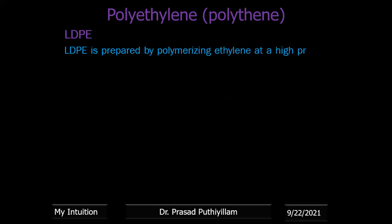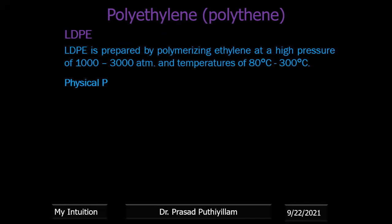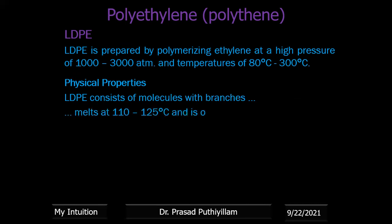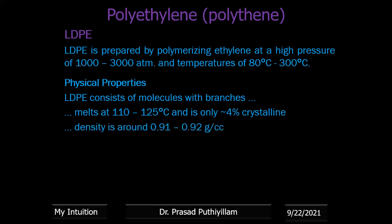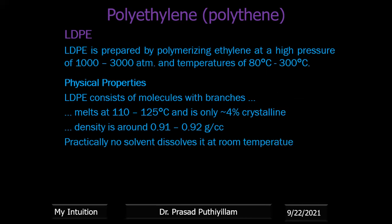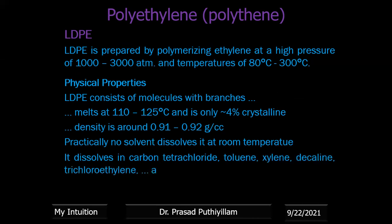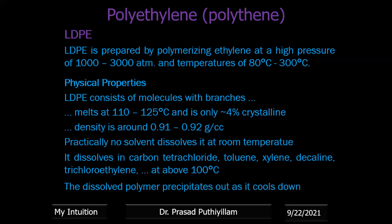LDPE is prepared by polymerizing ethylene at a high pressure of about 1000 to 3000 atmospheres and a high temperature up to 300°C. LDPE consists of molecules with branches, melts at around 110–125°C, and has very low crystallinity — only up to 4%. Density is around 0.91 to 0.92 g/cc. It cannot be dissolved by any solvent at room temperature, but above 100°C it dissolves in carbon tetrachloride, toluene, xylene, decalin, and trichloroethylene. On cooling below 100°C, the dissolved polymer re-precipitates.